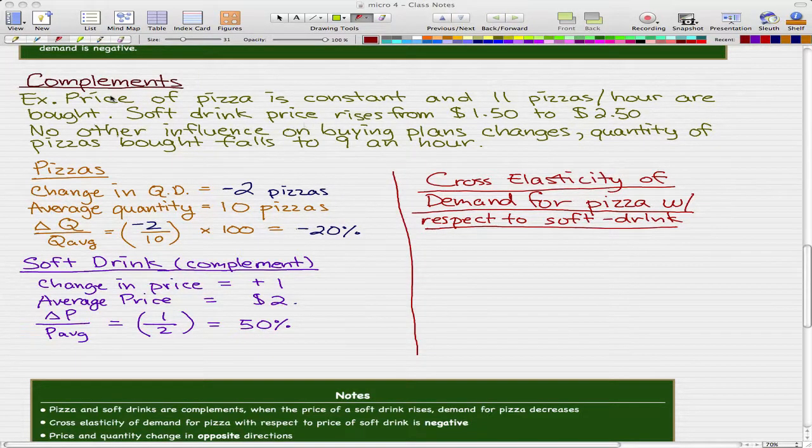Today's video we're going to talk about complements and we're going to use an example again. The example is much the same as the last video's example except that we start off with the pizza, the price of pizza being constant and it's 11 pizza an hour that is bought. Soft drink price rises from 150 to 250 and no other influences on buying plans changes. The quantity of pizza bought falls to 9 an hour after the price of soft drink rises and that's another change for this example.